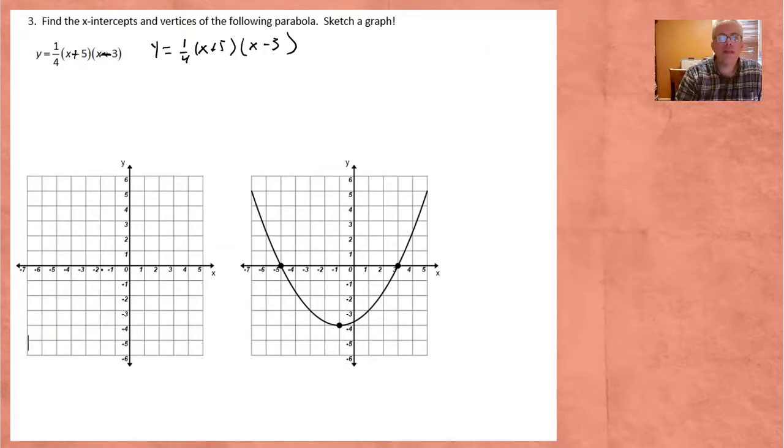Time for our last example. There's kind of a couple typos here. It should be y equals one-fourth x plus 5 times x minus 3. So our first intercept is at negative 5 comma 0, and our second intercept is at 3 comma 0. So negative 5 comma 0 is right there, and 3 comma 0 is right there.